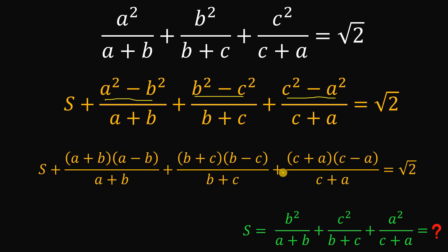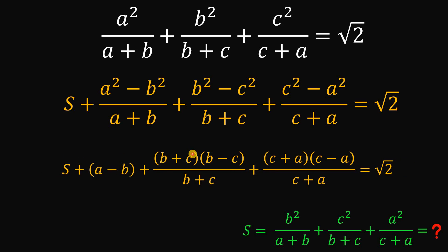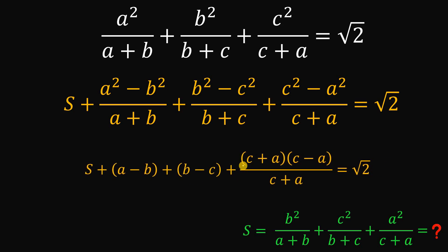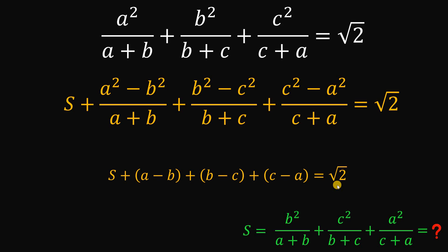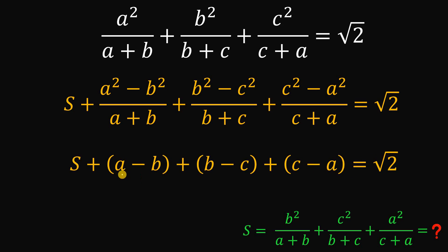We factor those out: a plus b over a plus b equals 1, b plus c over b plus c equals 1, so the remaining term is b minus c. Similarly, c plus a over c plus a equals 1. When we add all of these remaining terms, positive a and negative a cancel to zero, negative b and positive b cancel to zero, and negative c and positive c cancel to zero.